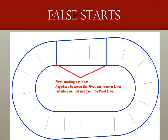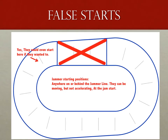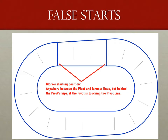From here, let's go into the sometimes confusing world of false starts and illegal positioning. False starts are pretty common — these are when a skater is fully inbounds but in an illegal starting position. Legal starting positions are: for pivots, anywhere between the pivot and jammer lines, including on but not ahead of the pivot line. For jammers, it's anywhere on or behind the jammer line. For blockers, it's anywhere between the jammer and pivot lines and not on them at all. Being on the line but having part of the skate or body touching in front of the line counts as a false start.